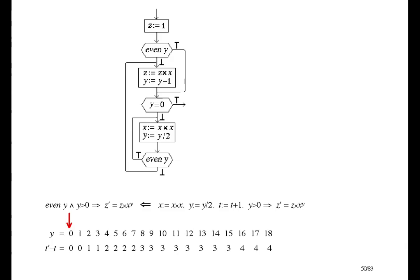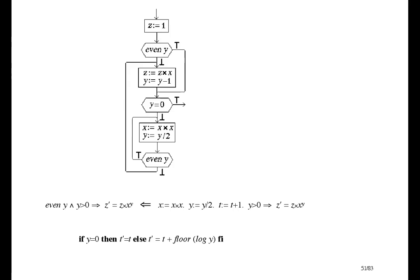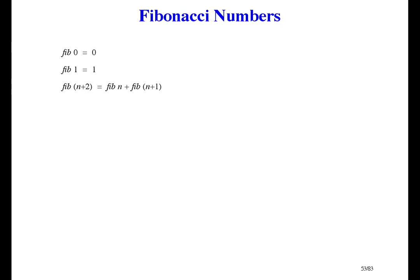This time it's the floor of the log. There's one point that doesn't fit the pattern: the log of 1 is 0, and the log of 0 isn't well defined. So here's my timing specification: if Y equals 0 then T prime equals T, else T prime equals T plus floor log Y base phi. That's recursive time exactly, but it's easier to prove that time is bounded above by log Y without the floor function. I'll leave the proofs to you because I want to move on to our next great example — the Fibonacci numbers.